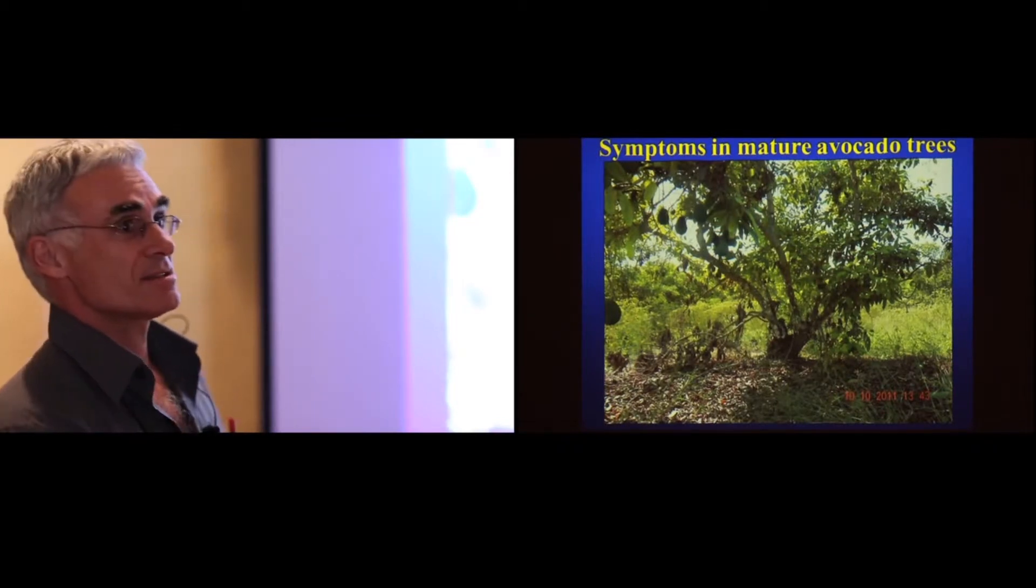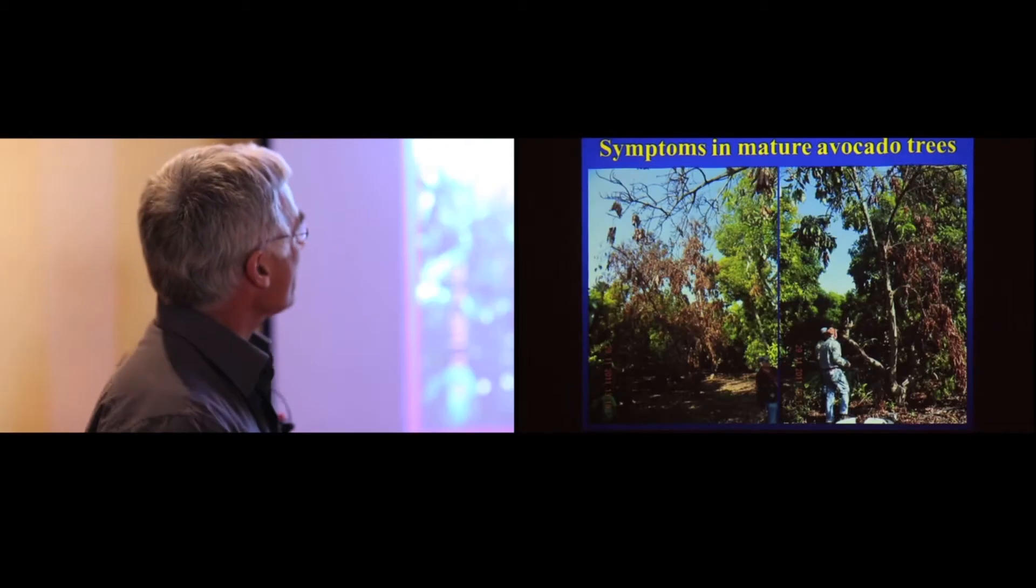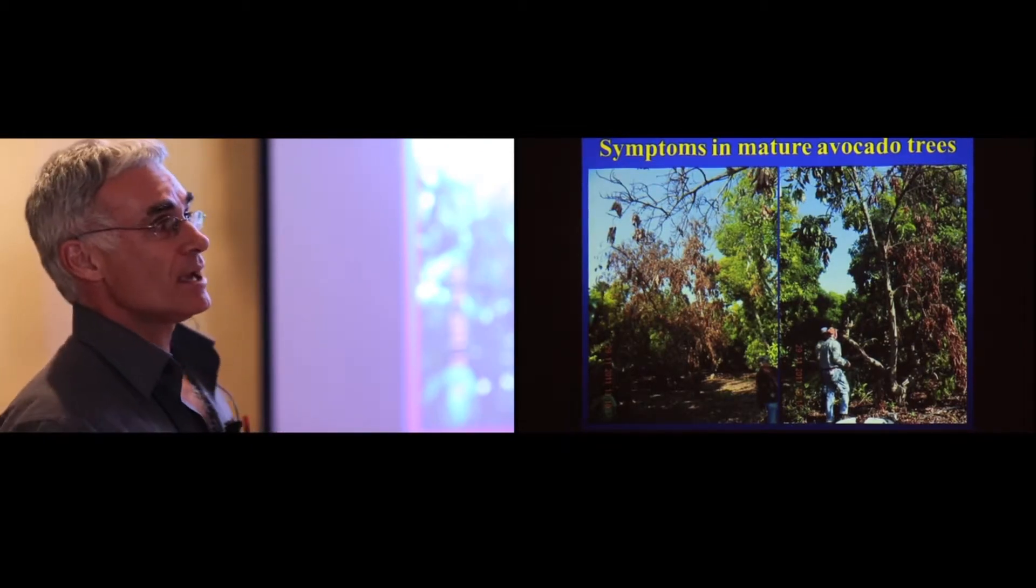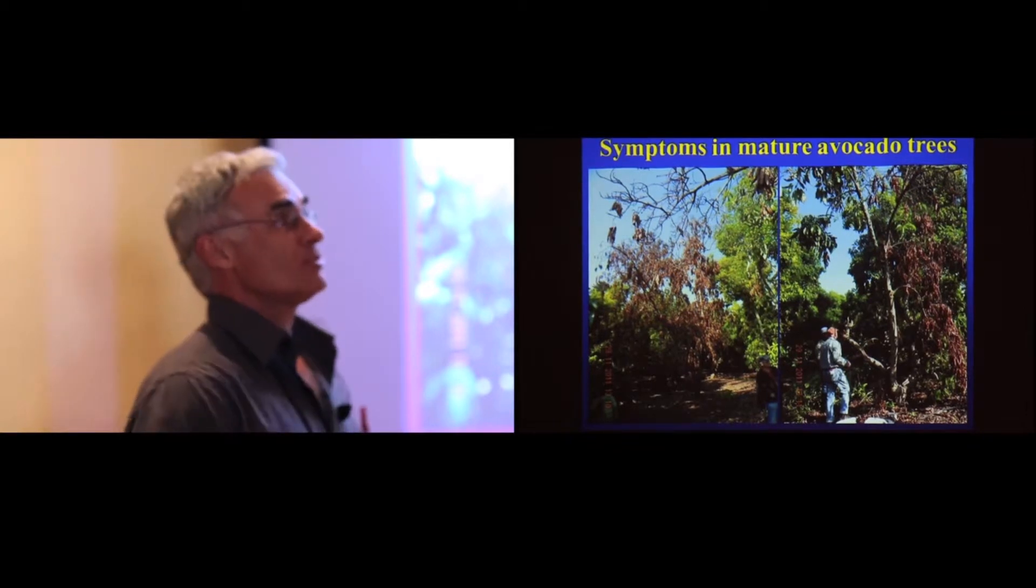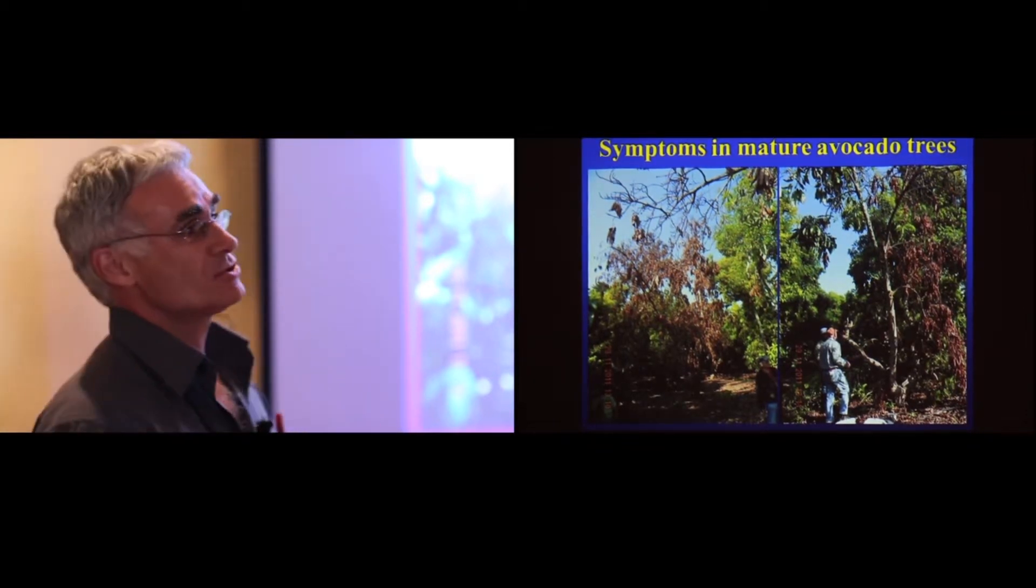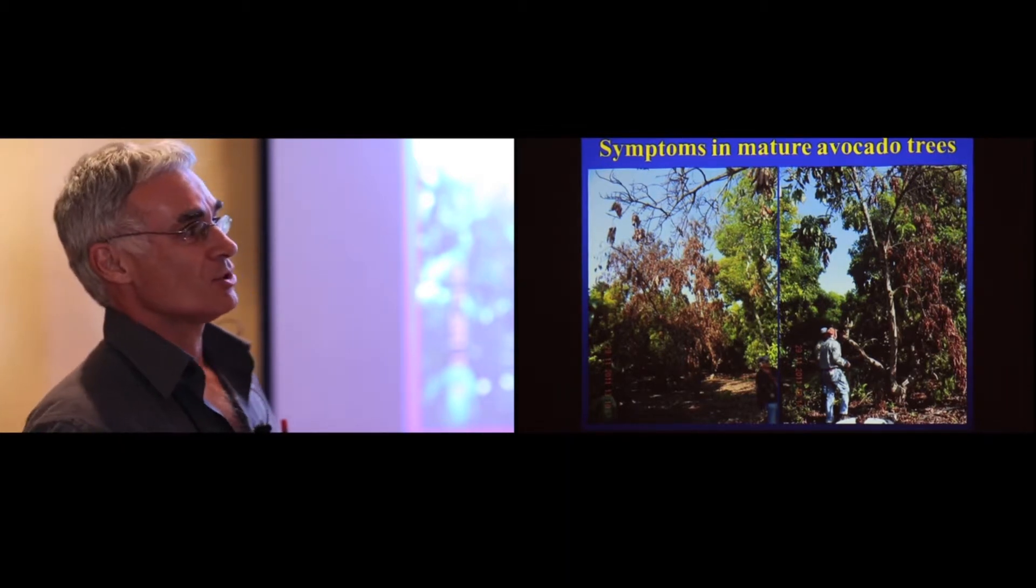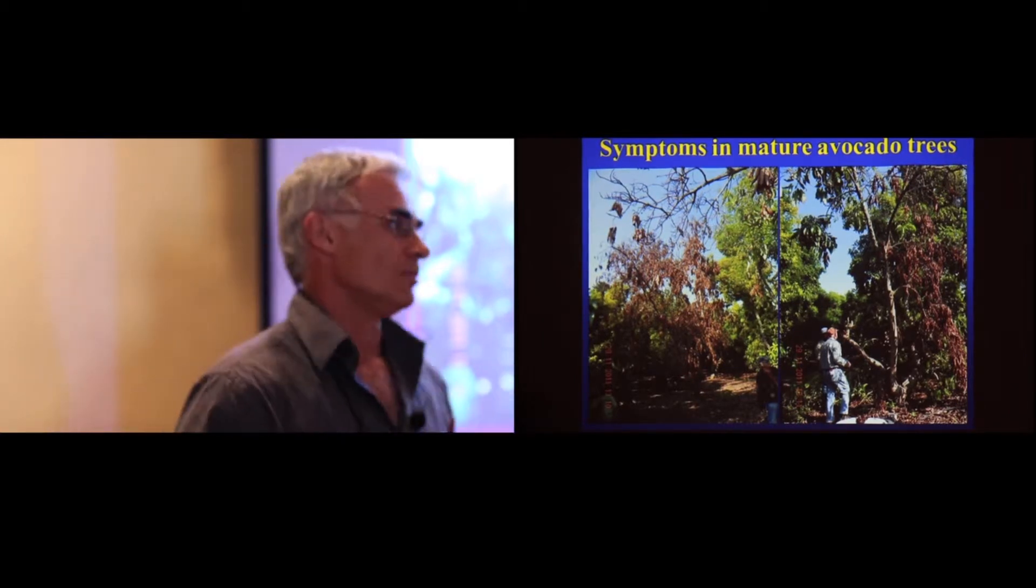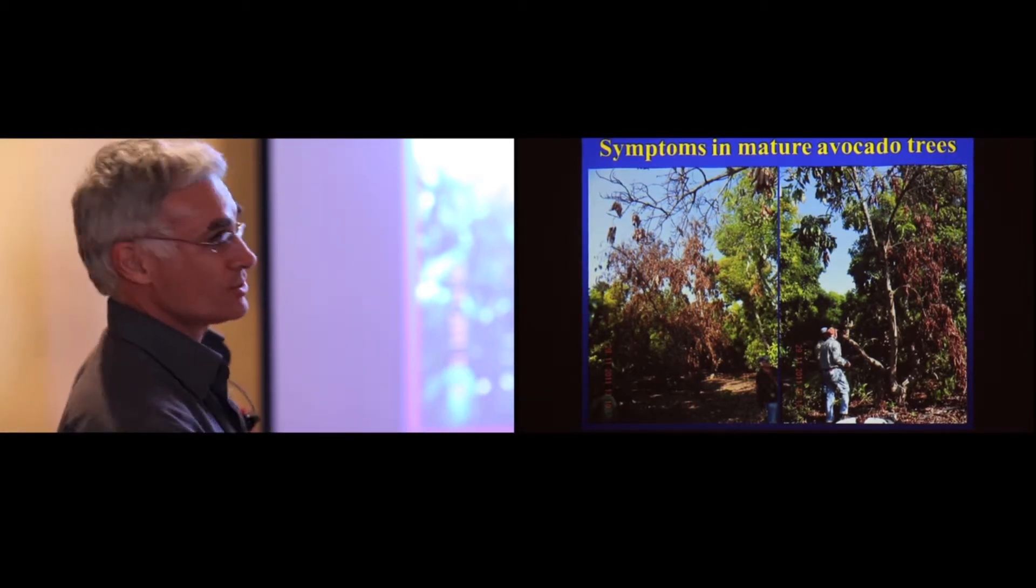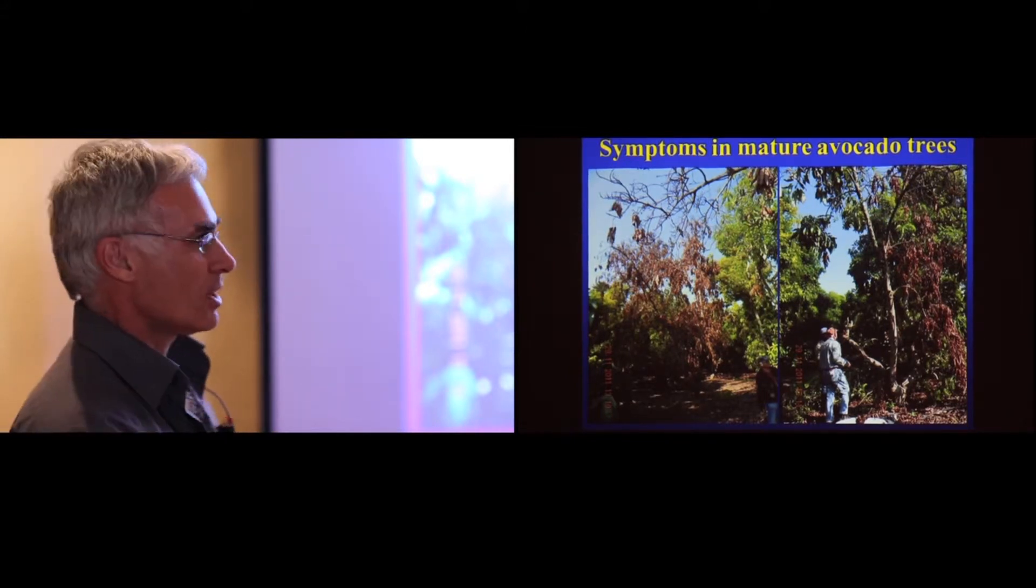But in effect, this is the situation in a mature orchard which is affected. You do get mortality of trees. Usually a farmer won't allow his field to get to a situation like this because a field like that is non-productive. But for experimental purposes, we are allowed to let a situation like this arise.